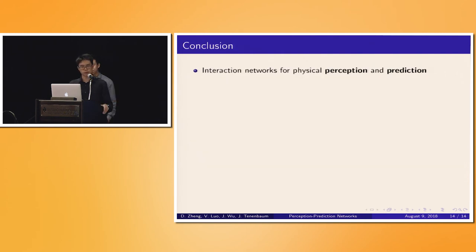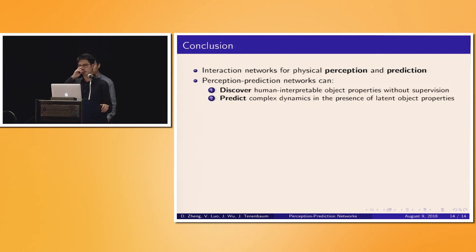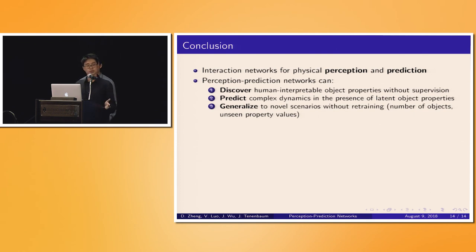In conclusion, we've shown that interaction networks can be used both for the physical perception and prediction tasks. The unique combination of perception prediction networks accomplishes three really important tasks. First, they can discover object properties without the need for supervision — in a completely unsupervised manner, they recover properties which are directly human-interpretable, as we saw with log mass, log charge, and coefficient of restitution. Second, they serve as a good physics engine in that they can predict complex object dynamics even in the presence of latent object properties. Third, they have very desirable generalization properties — they generalize to novel scenarios without retraining, to different numbers of objects, and to property values outside the range seen during training. Thank you for listening.